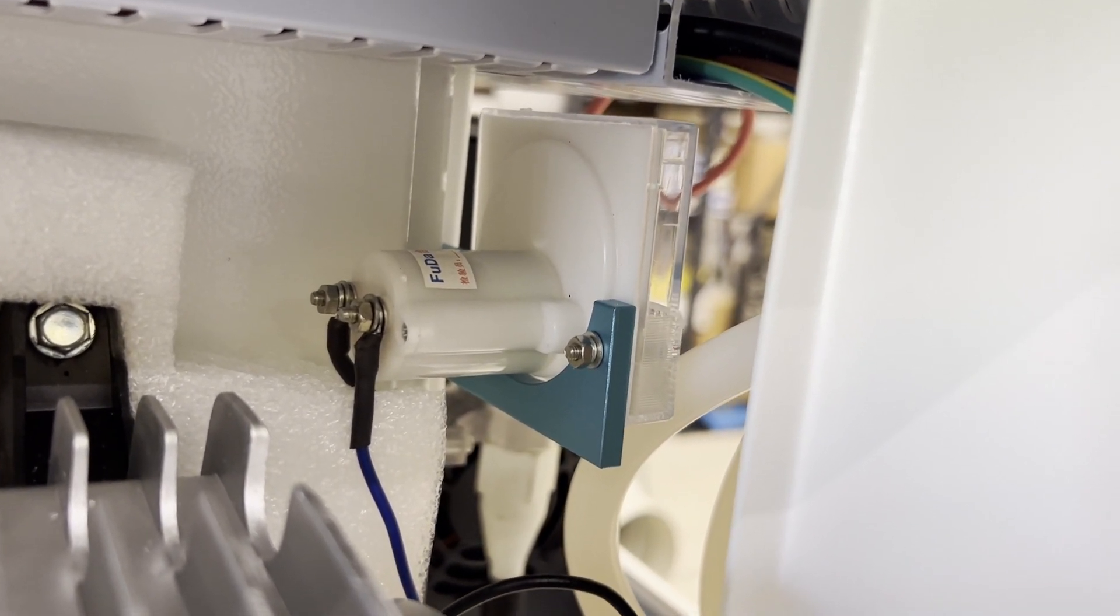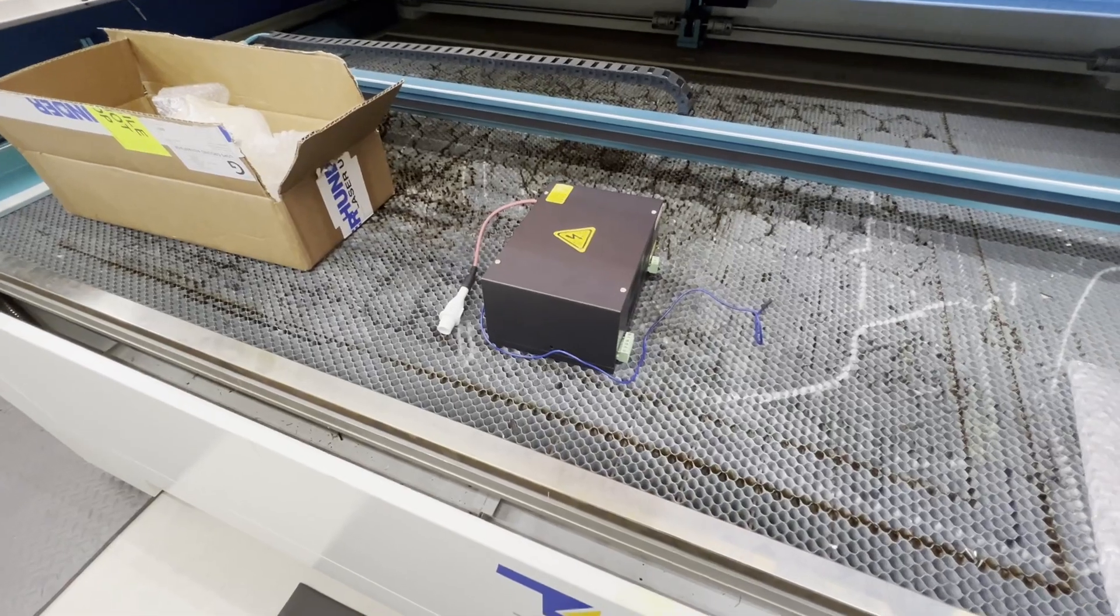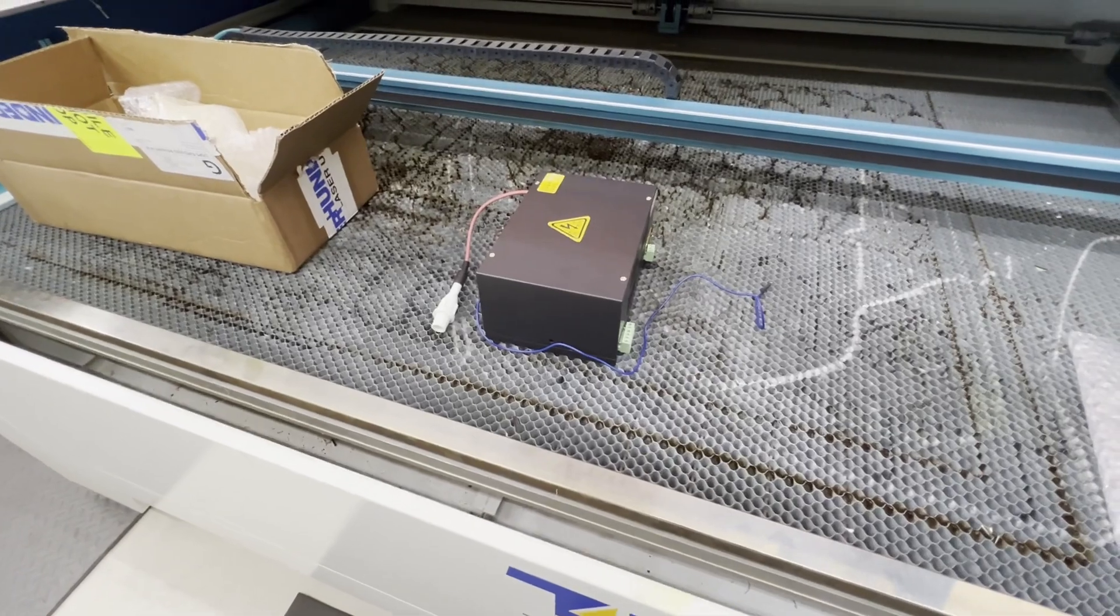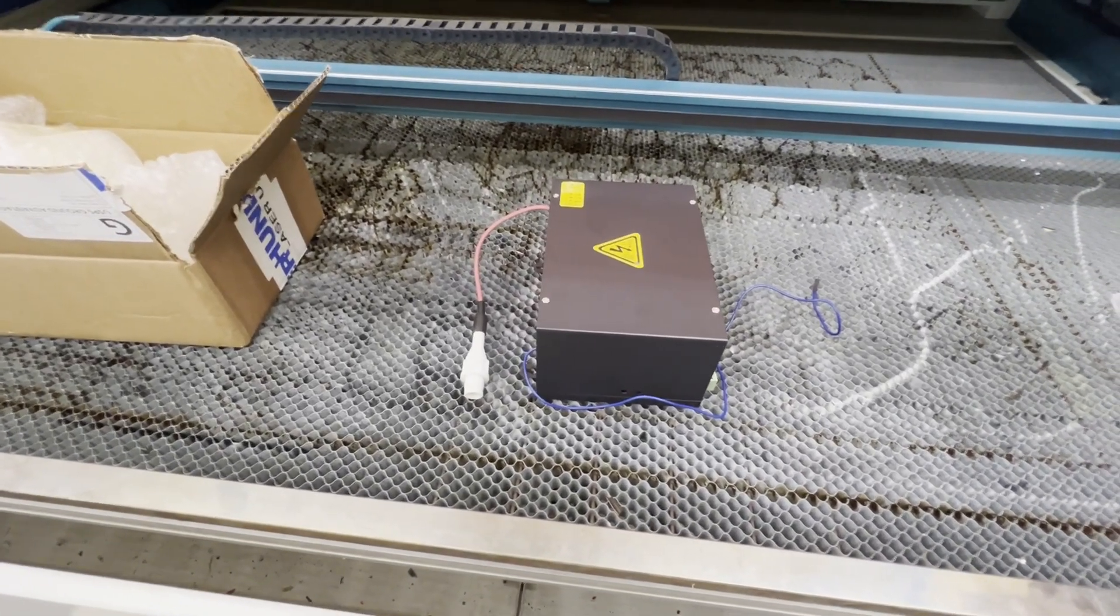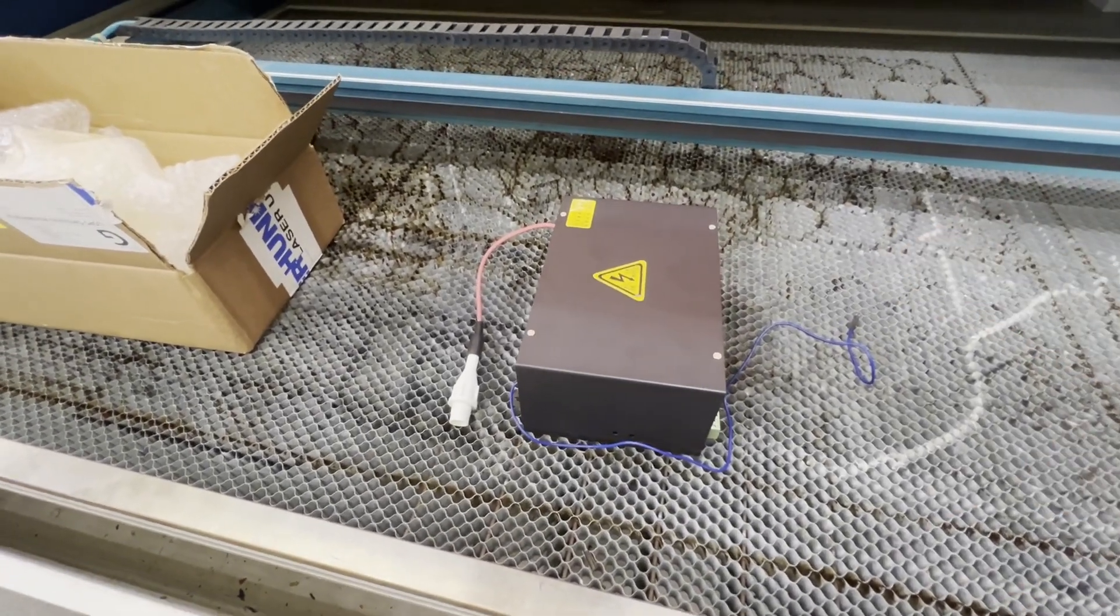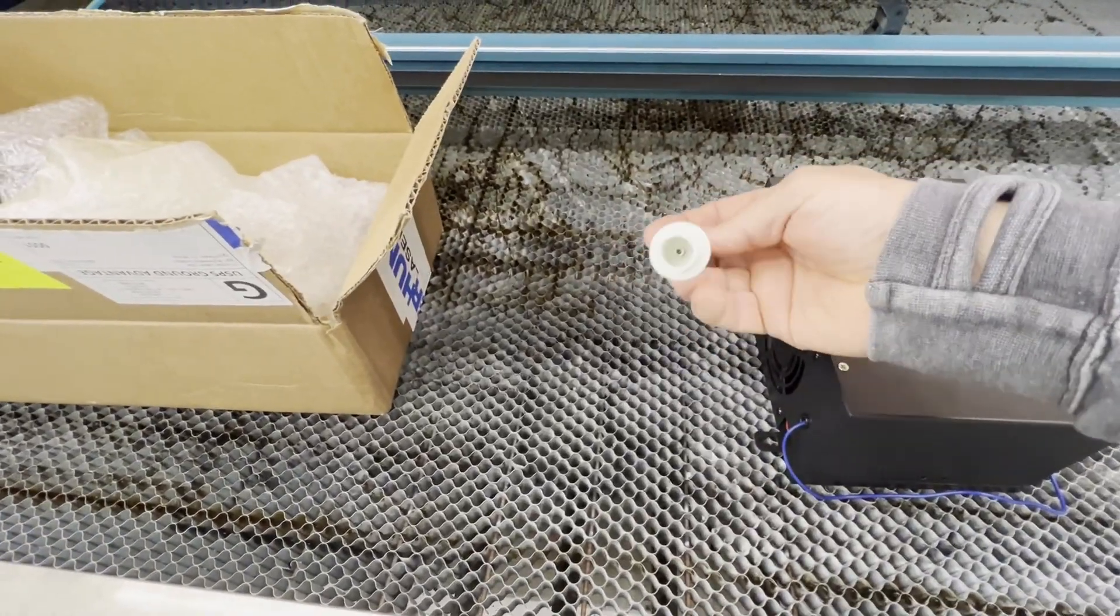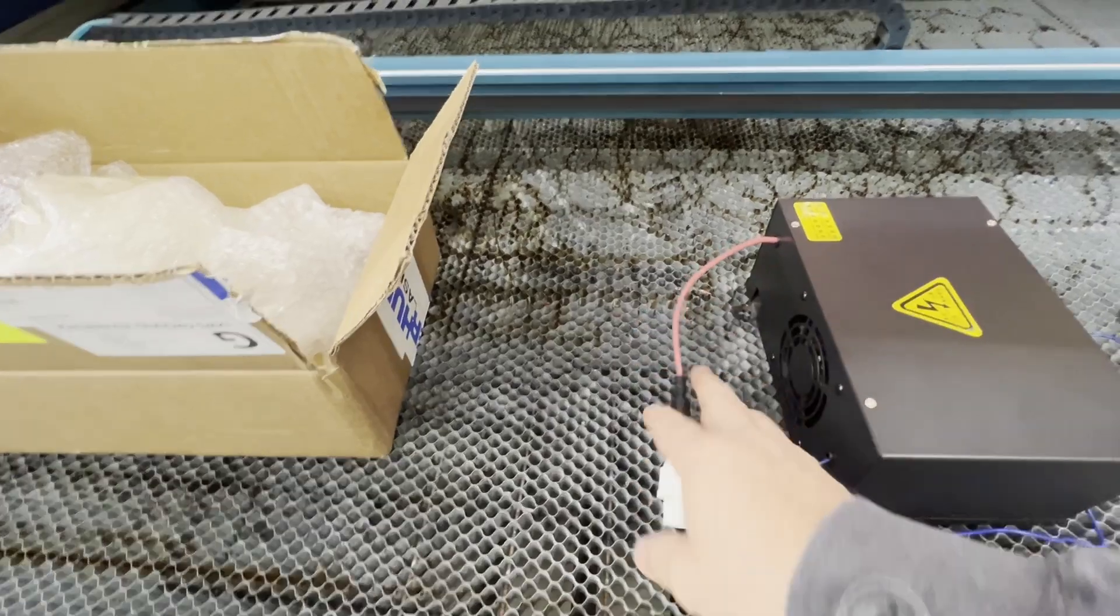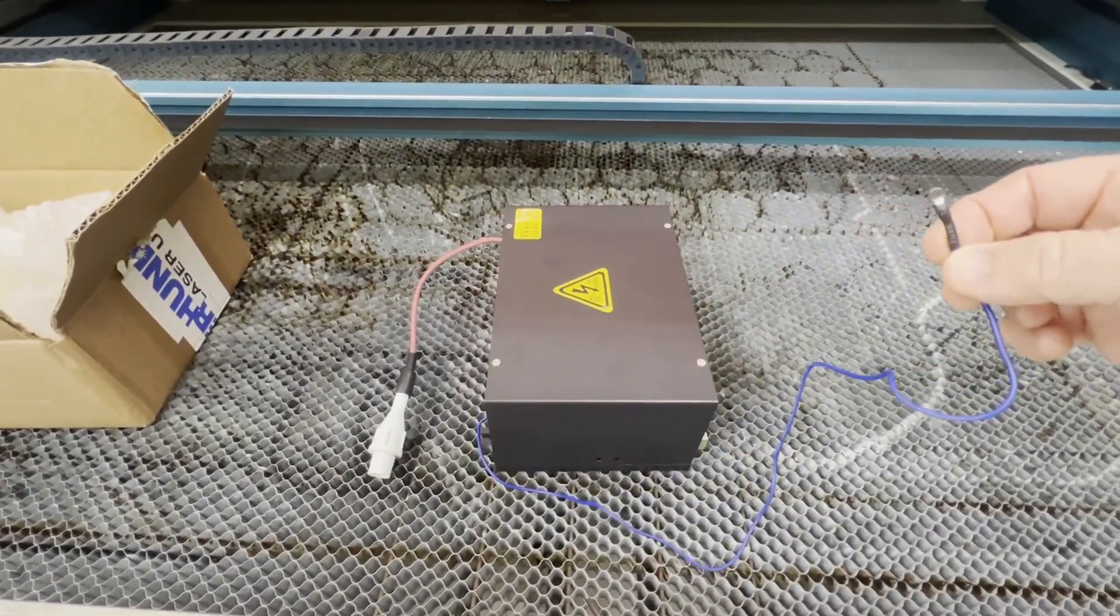You will just take that off to get that terminal off, and that's how you remove it. Now you have your brand new LPSU and you want to get it installed. Let's just take a look at it real quick and we'll go over the parts and pieces. Coming off of this we have our high voltage cable and this goes to the tube directly.